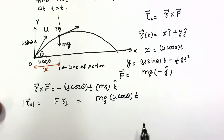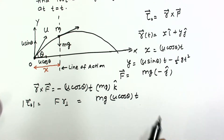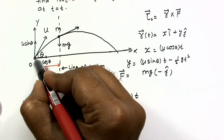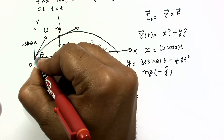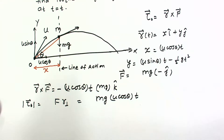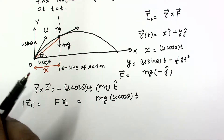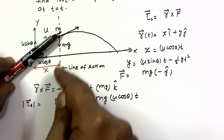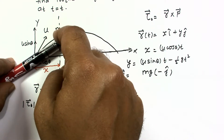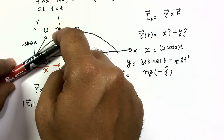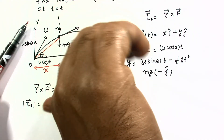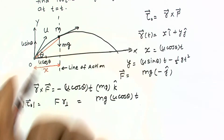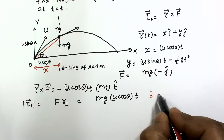We can use R cross F, or we can use the rod analogy from the last class: assume the position vector is like a rod, and the force acts on it. This will rotate in the clockwise sense. Clockwise rotation means the torque direction is into the page — the thumb points inside.